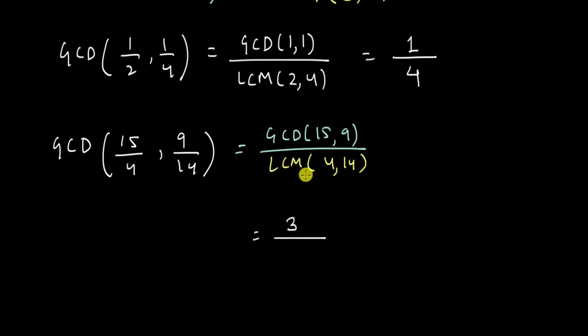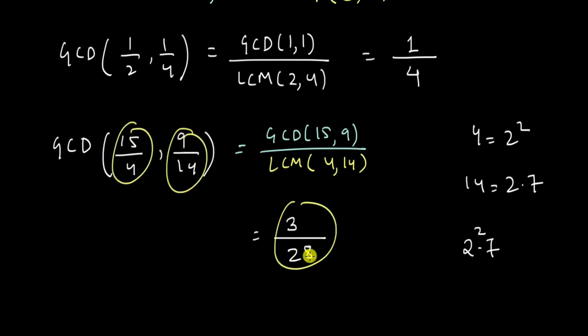And downstairs we'll have the LCM of 4 and 14. So 4 is 2 to the power 2 and 14 is 2 into 7. So the common multiple will be 2 into 7, but we need another 2 to get 4. So it will be 2 squared into 7 that is 28. This is the GCD of these two numbers. To confirm that this is a divisor for these two fractions, why don't you divide this by this and the second fraction by this and see that you're getting integers. All right, I hope we're clear with this trick.